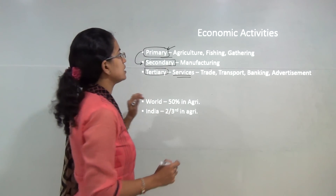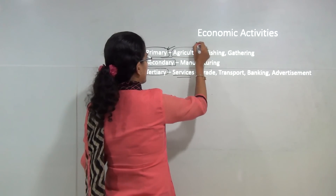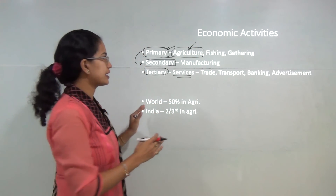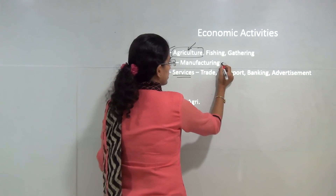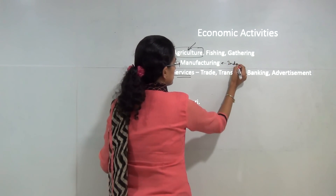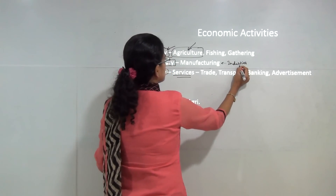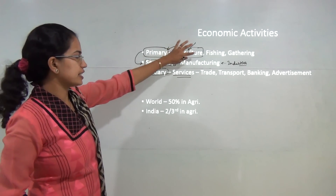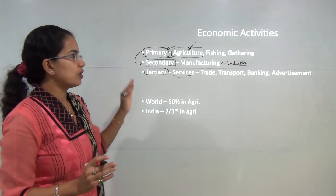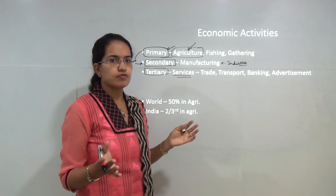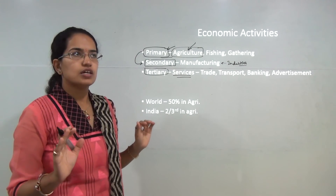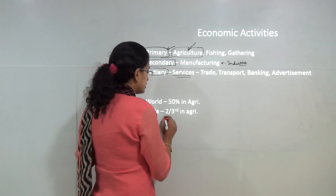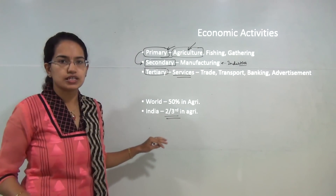As you can see, agriculture falls into the primary economic activity. Under this we will be studying agriculture, and in the next NCRT topic we have industries, which is a secondary sector. Globally, nearly 50% of the total people are engaged in agriculture, and in India it is nearly two-thirds of the population.